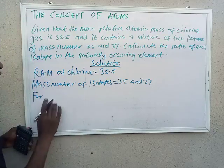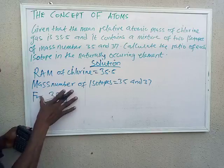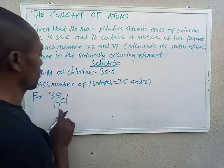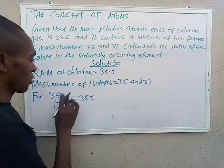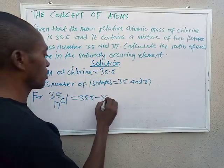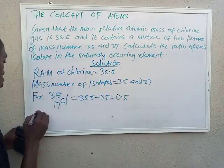For isotope chlorine-35, we have 35.5 (the relative atomic mass) minus the mass number 35, which gives us 0.5.